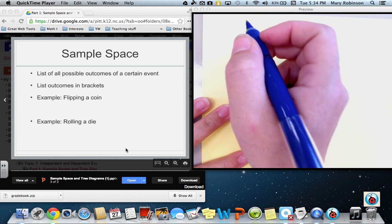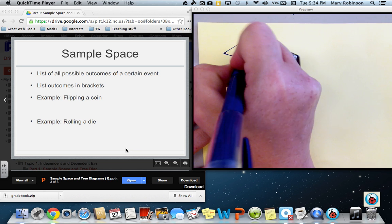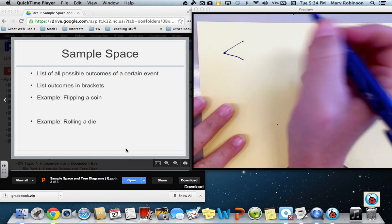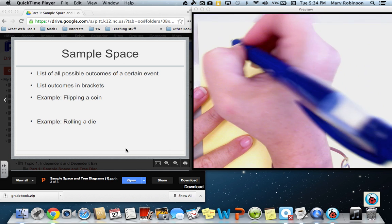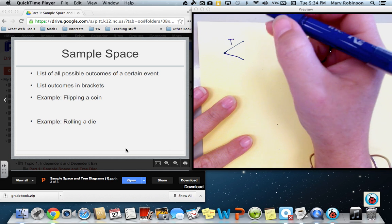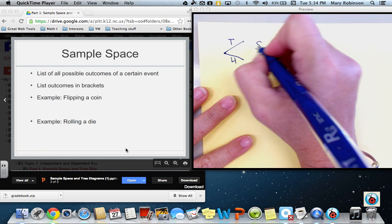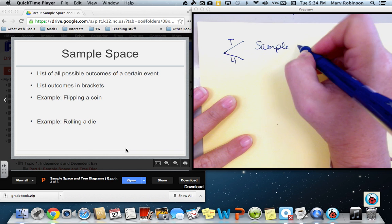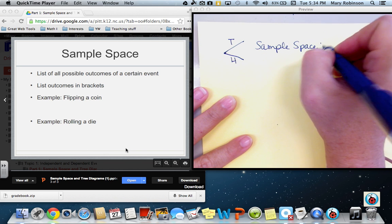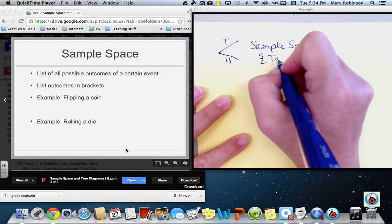For example, flipping a coin. When one flips a coin, there are two possible outcomes. This tree diagram shows two branches illustrating that there are two possible outcomes. You can either flip and get a tail or a head. Therefore, the sample space for flipping a coin is tails or heads.